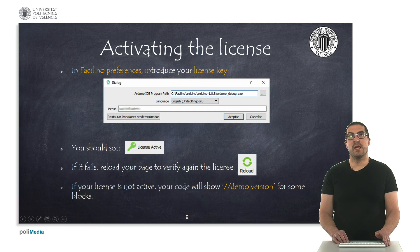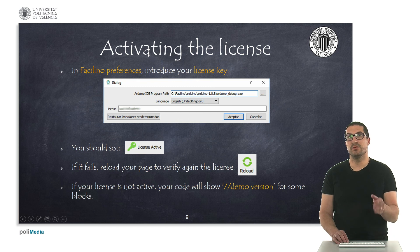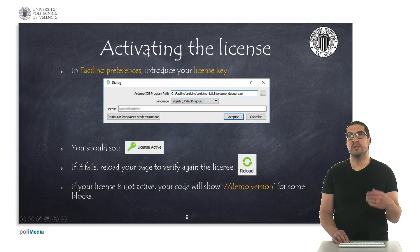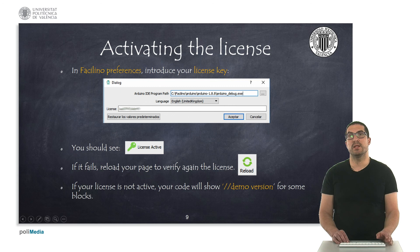Once you have the license, you simply have to go to Facilino preferences and introduce the license there. There's a field for that. You just have to accept it and then immediately you should see that your license is active at the bottom of the software. If it fails for whatever reason, you can always try to verify the license again by clicking the reload button.